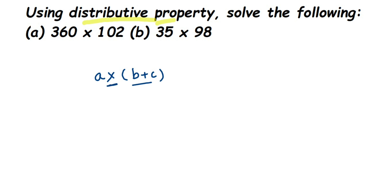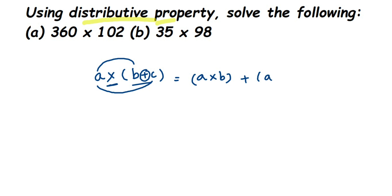We have to multiply a with b, and then multiply a with c — it's like we are opening the brackets. So this will be equal to a into b, plus a into c. This is called distributive property — you are distributing a, multiplying it with each term inside the bracket.